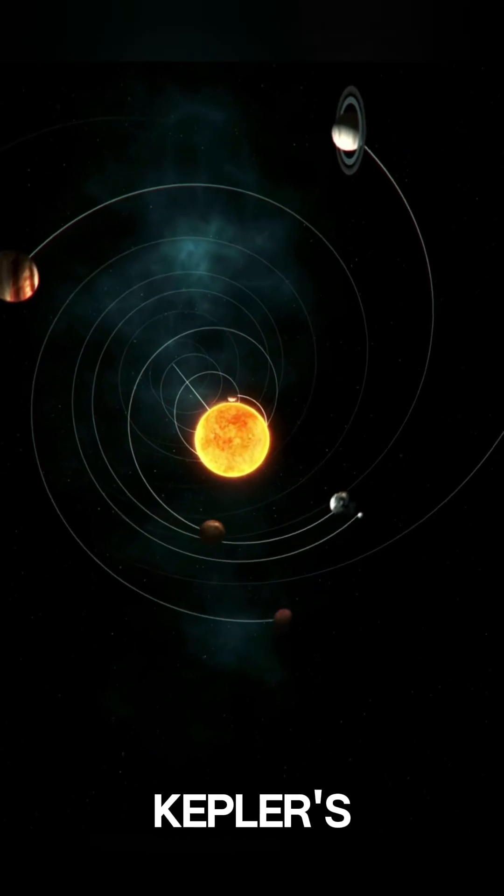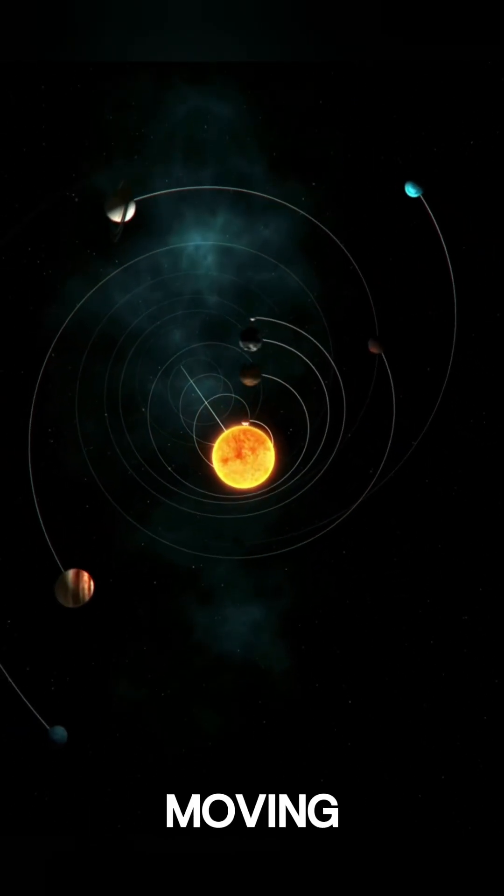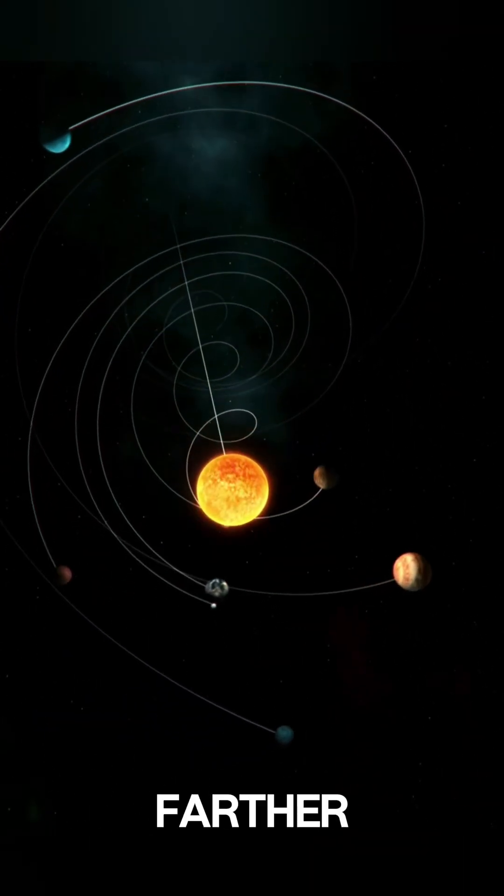Planetary orbits follow Kepler's laws, with planets moving faster when closer to the sun and slower when farther away.